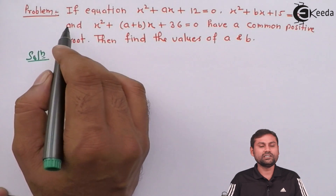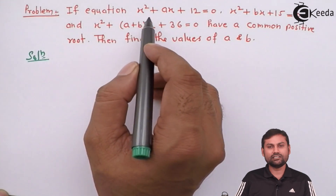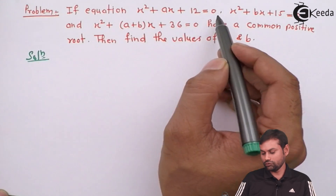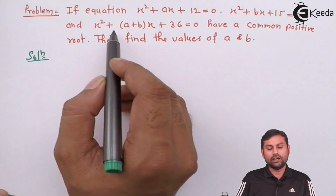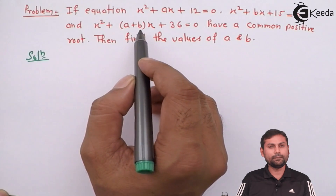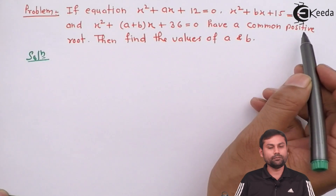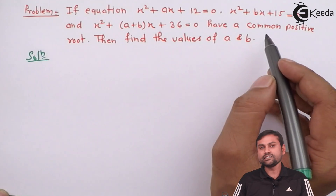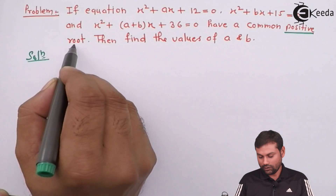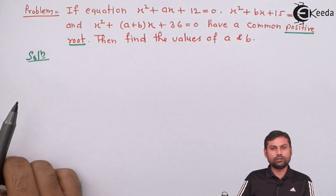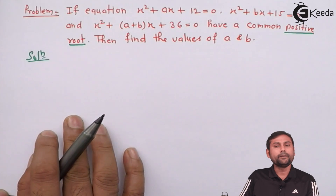The question I have written on the paper: If the equations x² + x + 12 = 0, and x² + bx + 15 = 0, and x² + (a+b)x + 36 = 0 have a common positive root, then find the value of a and b.